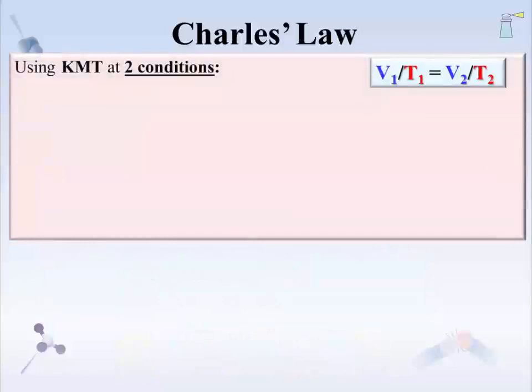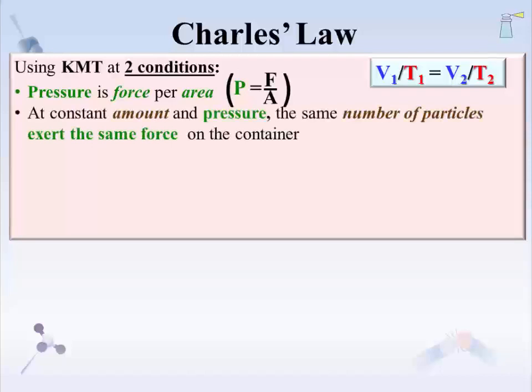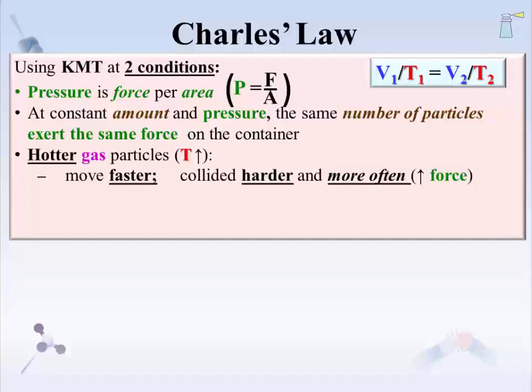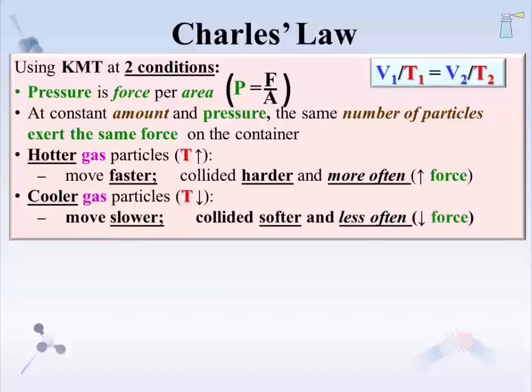Charles' law can be rationalized through the Kinetic Molecular Theory at two conditions. Even though the law focuses on volume and temperature, it's easier to understand through pressure. Pressure is force per area, and force is about collisions. For this demonstration, we need to keep in mind that at constant amount and pressure, the same number of particles exert the same force on the container. Hotter gas particles — higher temperature — are moving faster. They collide with the sides of the container harder and more often, producing a greater force. Cooler gases — lower temperatures — have the particles moving slower. They collide softer and less often, producing a lesser force.